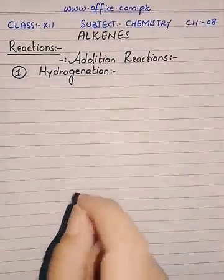Bismillahirrahmanirrahim. Dear students, assalamu alaikum and welcome to office.com.pk. This is your chemistry class and we are discussing about alkenes. Previously we discussed the general introduction, preparation, and physical properties of alkenes, and the reason why alkenes are more reactive compared to alkanes. Today we are moving forward and studying about the reactions of alkenes. The first class of reactions to be discussed are addition reactions, in which any atom is added by breaking of the pi bond, and the bonds will be available for further reaction. Atoms like hydrogen or halogen can be easily added to alkenes.